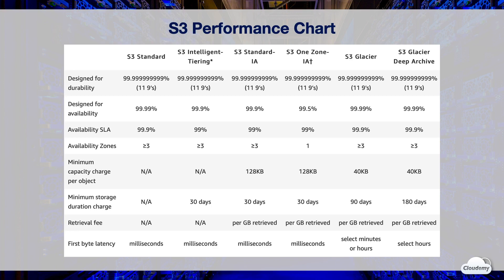For S3 Standard class the smallest object can be zero bytes and you won't pay for a minimum capacity per object. However, for Intelligent Tiering, Standard IA, One Zone IA, Glacier, and Glacier Deep Archive classes you need to pay for a minimum capacity charge per object. For instance, if you store an object smaller than 128 kilobytes in S3 Standard IA, you will be charged for 128 kilobytes of storage. S3 Intelligent Tiering charges a small tiering fee and has a minimum eligible object size of 128 kilobytes for auto tiering; smaller objects may be stored but are always charged at the frequent access tier rates.